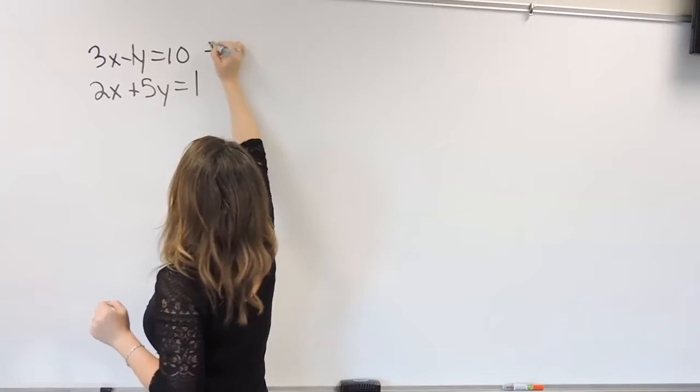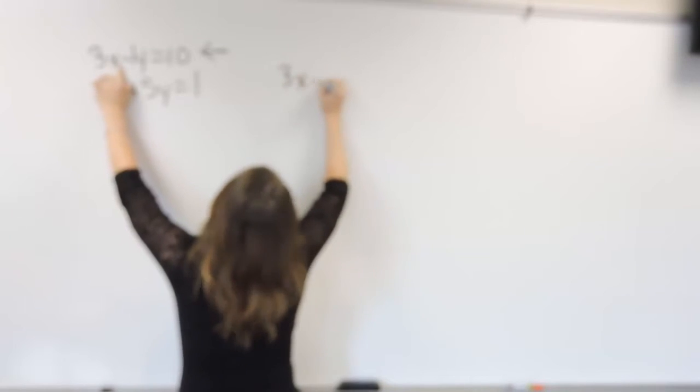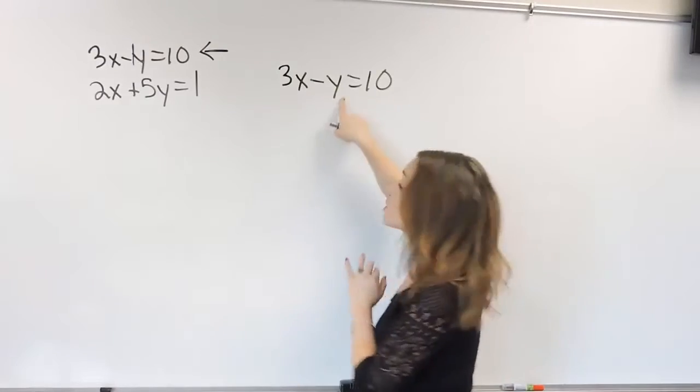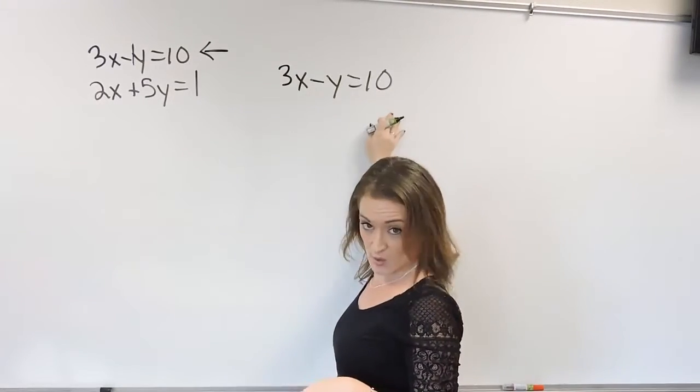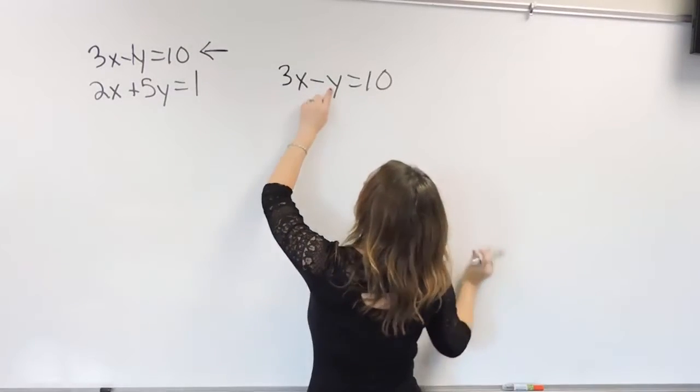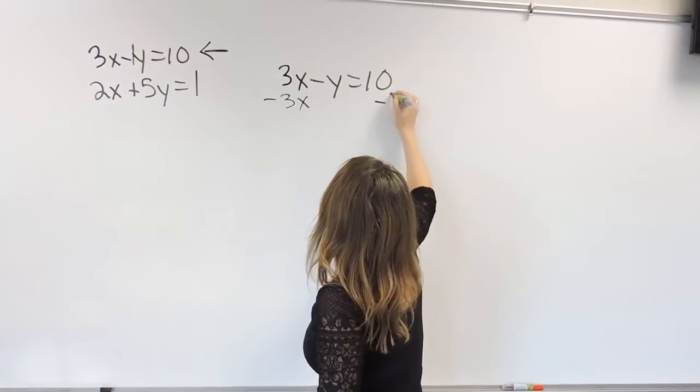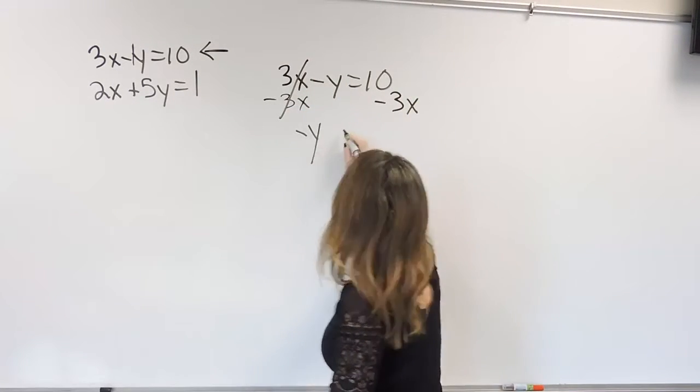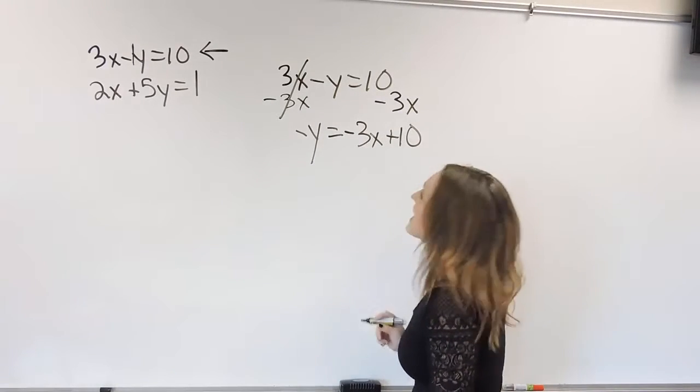So what I'm going to do is I'm going to pick the top equation, and I'm going to pick y. And what I'm going to do is I'm just going to take this equation over here, and because y is the easier one to solve for, I'm going to go ahead and solve for y and make this look like a y equals. So if I'm solving for y, I need to get rid of the 3x. So I'm going to subtract 3x on both sides. It'll cancel on the left, and we drop down negative y is equal to negative 3x plus 10.